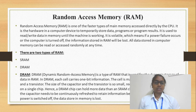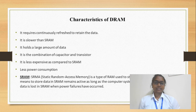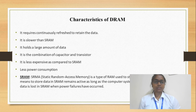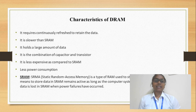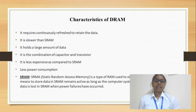DRAM is the most commonly used primary memory. It is cheaper than SRAM. Some characteristics of DRAM: it is slower than SRAM, it can store large amounts of data compared to SRAM, it is a combination of capacitor and transistor, and it consumes less power.